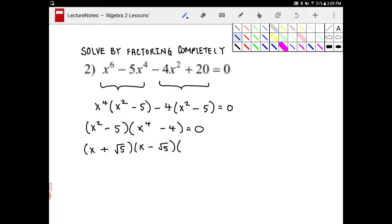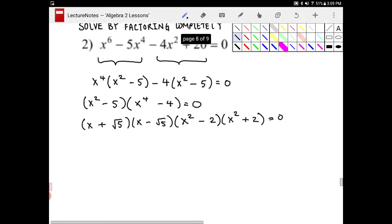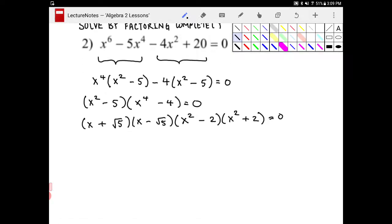And the x to the fourth minus four, well, that is a difference of squares. That is x squared minus two, x squared plus two. And I can continue factoring even further, because I noticed that x squared minus two, again, that is a difference of squares. So I can continue factoring that.